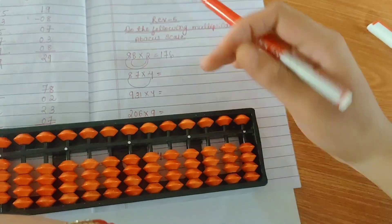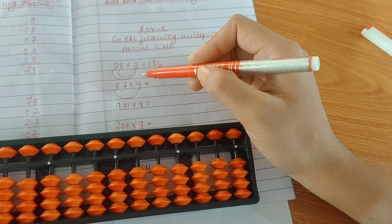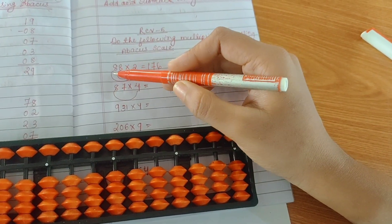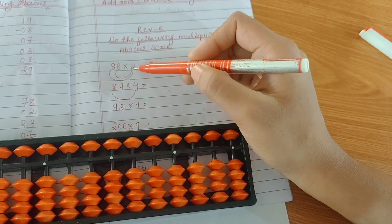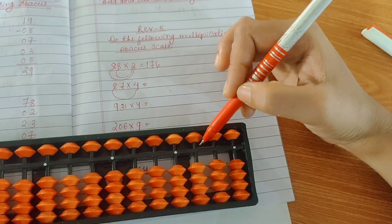In multiplication, the first rule is you will see how many digits the question has. Total 1, 2, 3 digit question, means you will start the answer from third row.